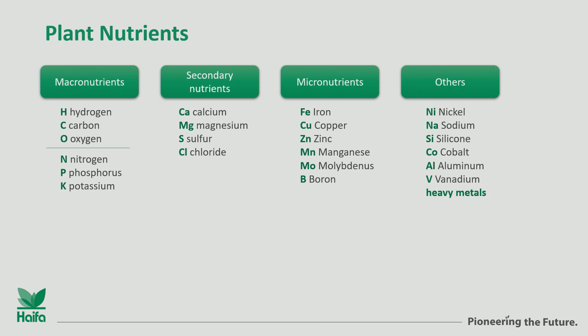For example, heavy metals - we need to keep heavy metals at a very low level. Marco was also talking about silicium. Silicium is not a basic nutrient, but it can play a beneficial role for some plants. In this group of other elements, I also put sodium, because like all the other elements, sodium is not necessary for plant growth, but we know that sodium exists and can influence plants.